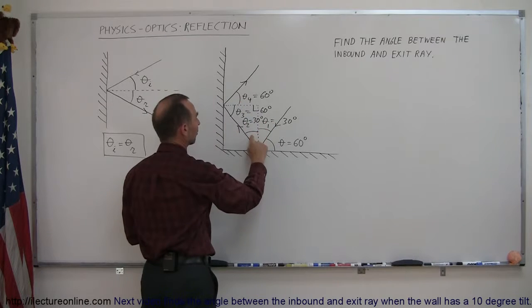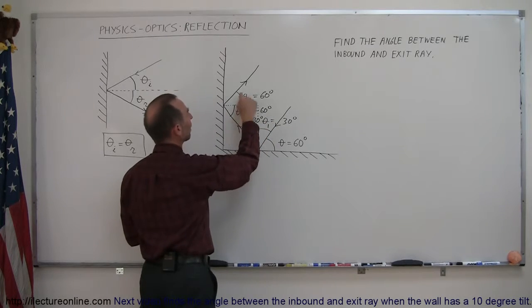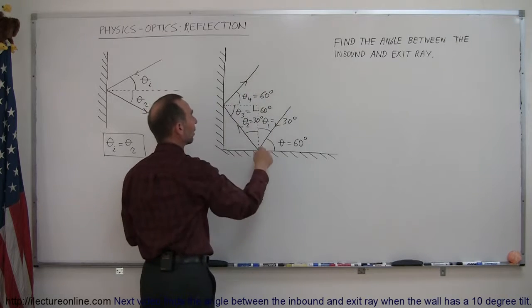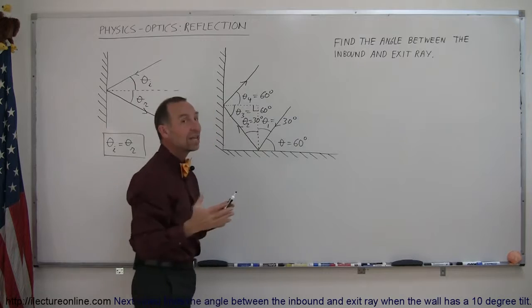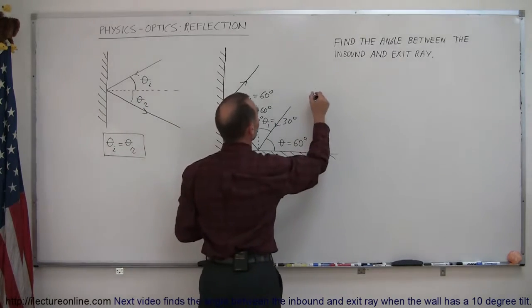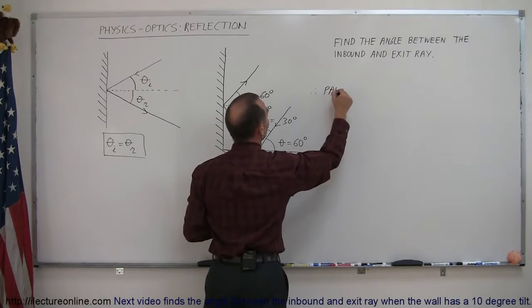I get 30, plus 30 is 60, plus 60 is 120, plus 60 is 180, so that means that the ray made a 180 degree change in its direction, which means that those two then must be parallel to each other. So therefore, the answer is they are parallel.